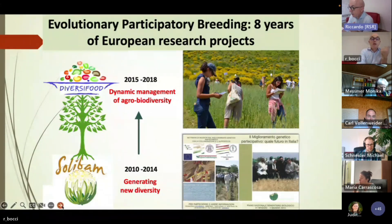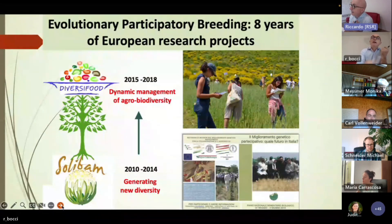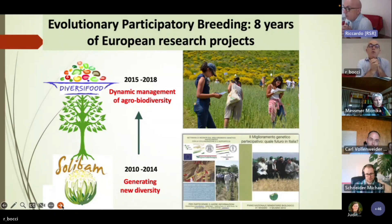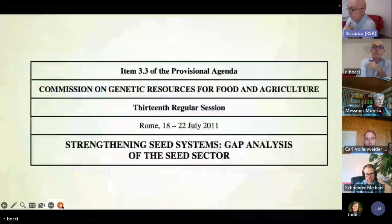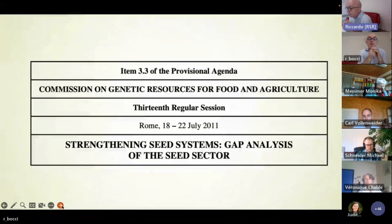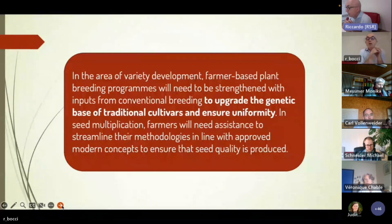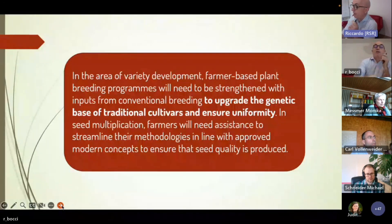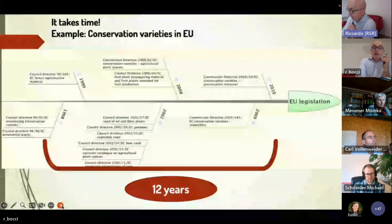Thanks to SOLIBAM, we got policymakers interested in populations and we got the idea that we needed to change our seed laws to create space for populations developed through European research projects. However, despite all of this, in the FAO Commission on Genetic Resources for Food and Agriculture report of 2011 on seed systems — 'Strengthening Seed Systems' — you can still find language about upgrading the genetic base of traditional cultivars while ensuring uniformity. Even in 2011, they were still talking about uniformity rather than diversity.